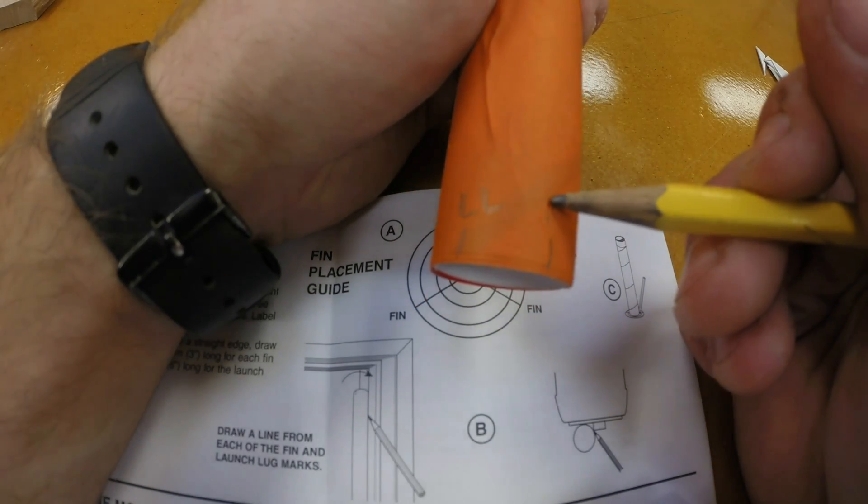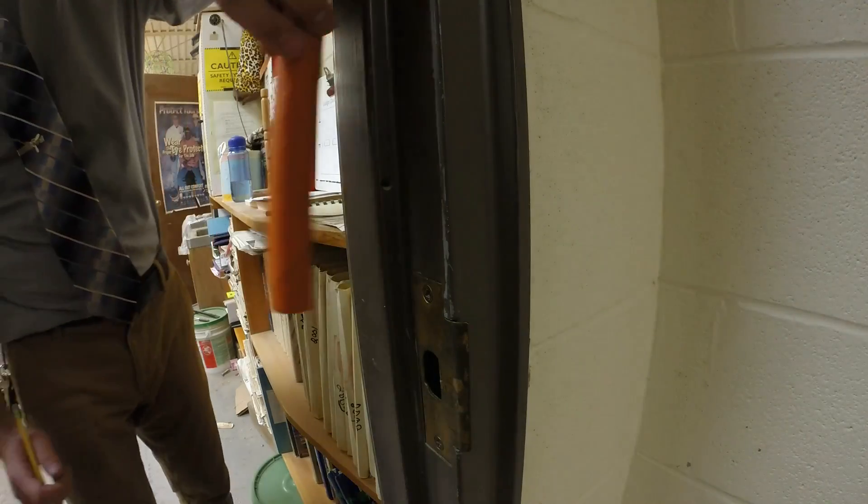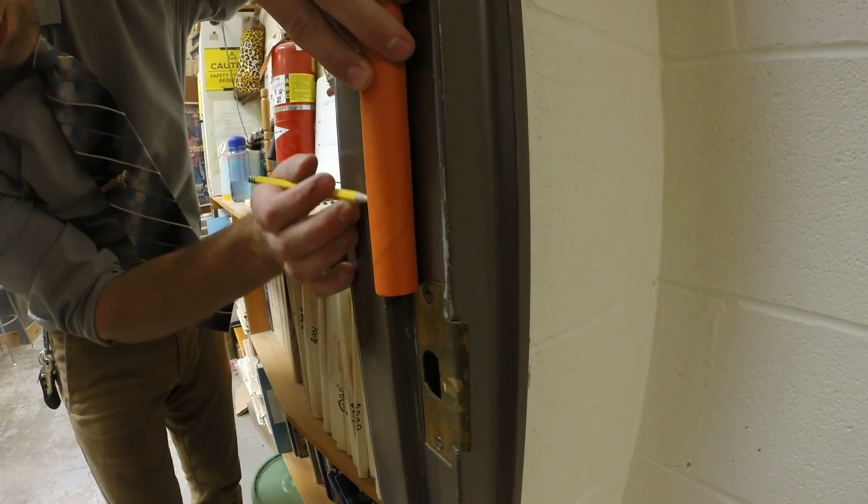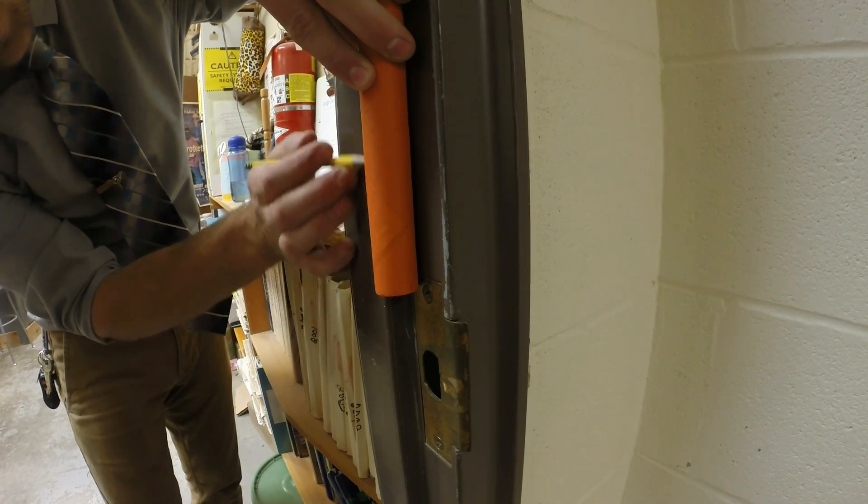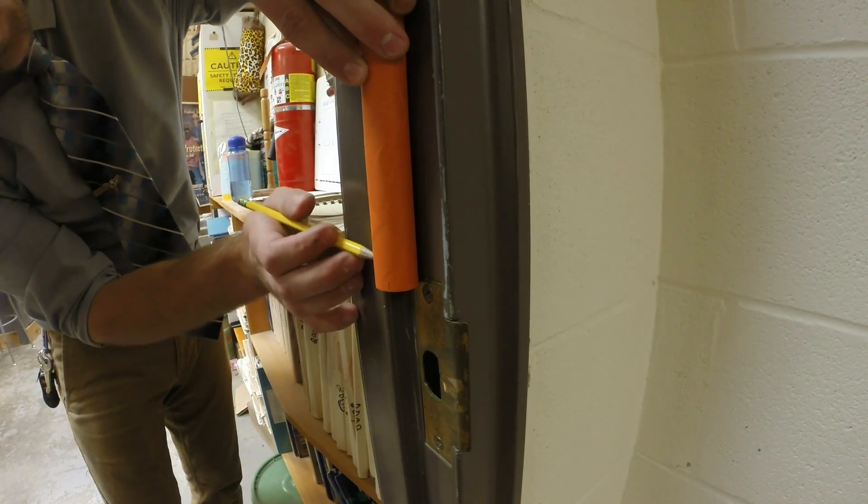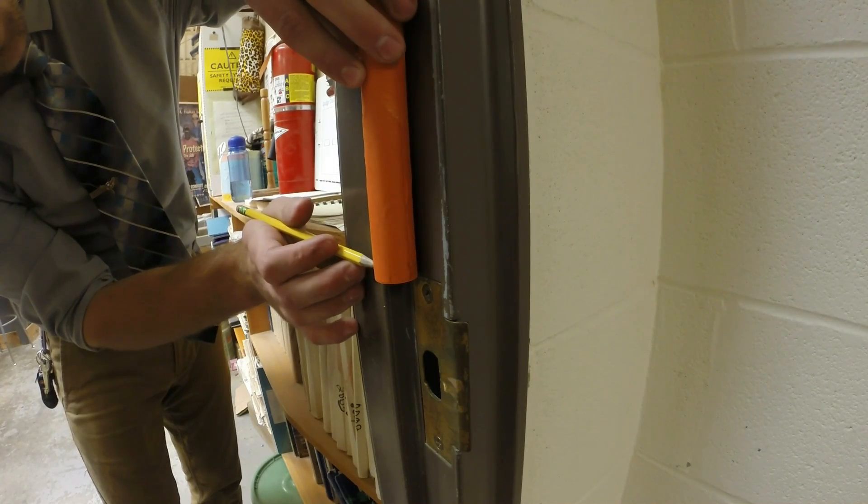It would be a good idea to label these marks for launch lug and for fins. Use the frame of a door as your straight edge to make sure that you're extending those marks perfectly vertically up the body tube.